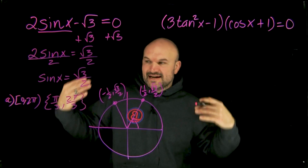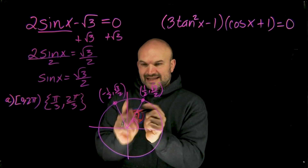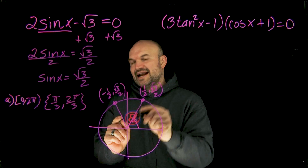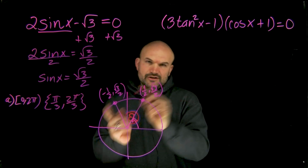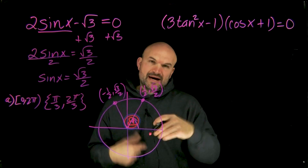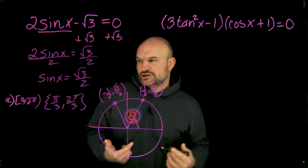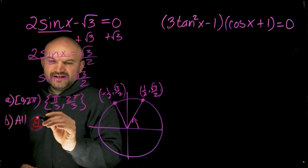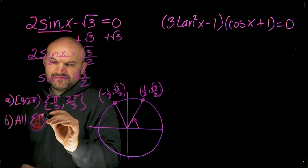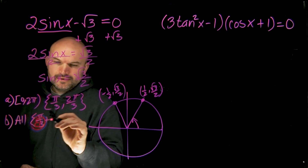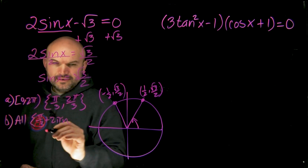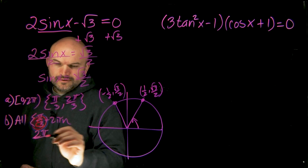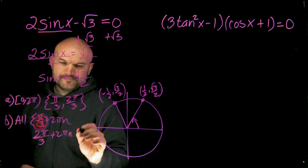Now if I want to find all of the solutions, there's no relationship between these two, so all I need to do is keep adding two pi — and you could also subtract two pi, which is why we use the integer n. So all solutions would be pi over three plus two pi n, and two pi over three plus two pi n.